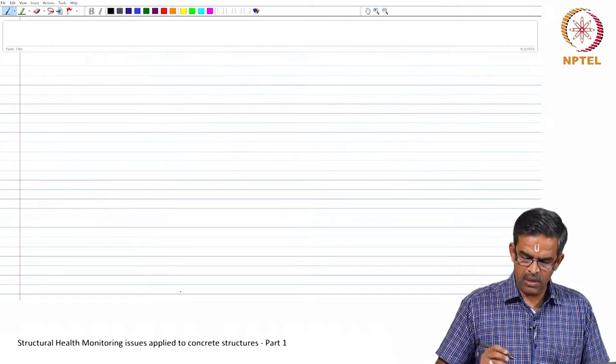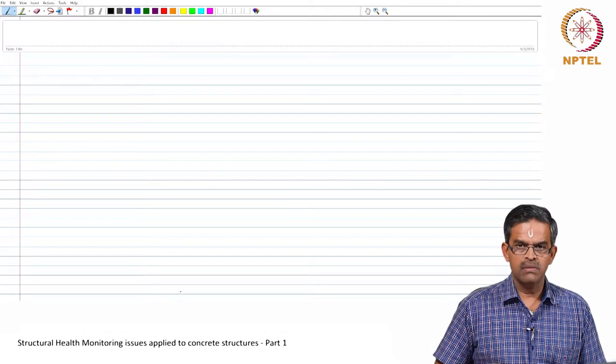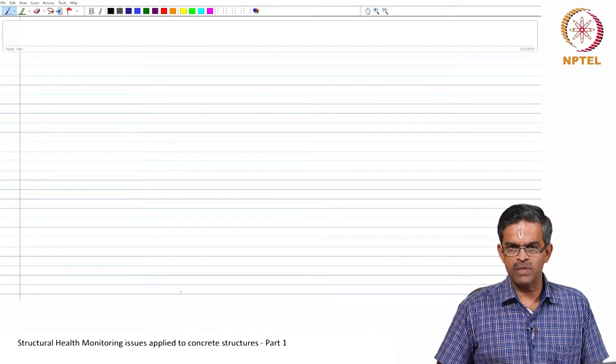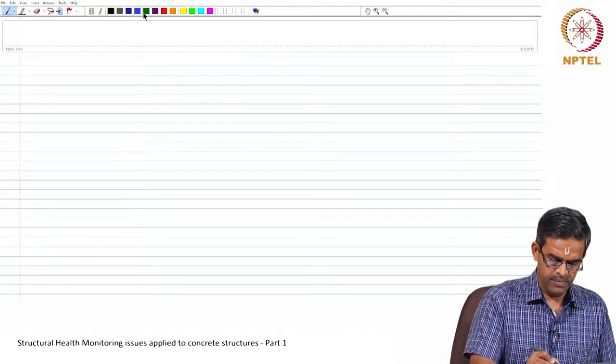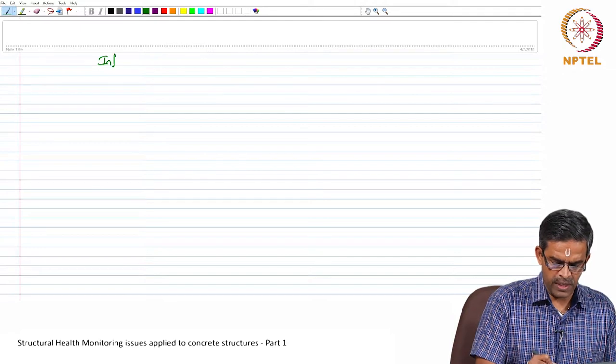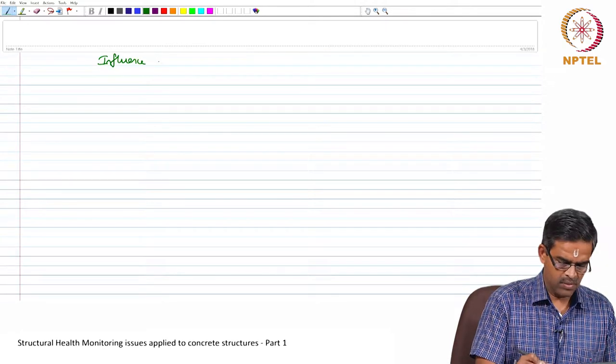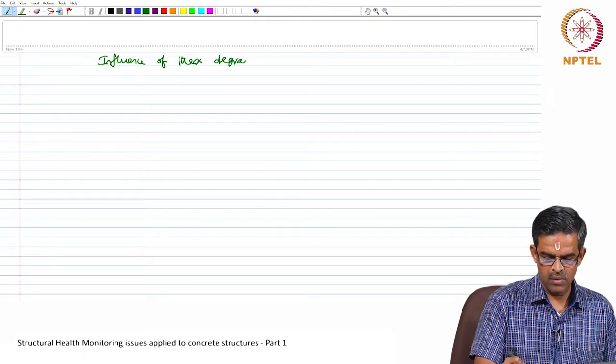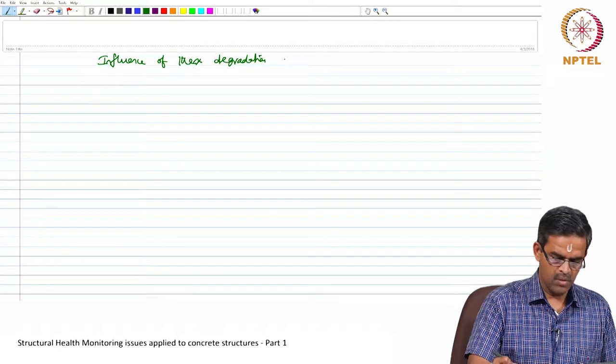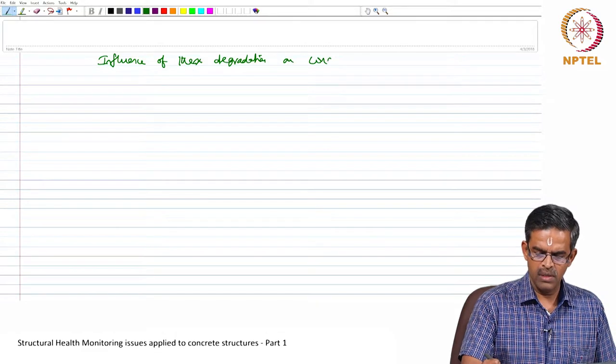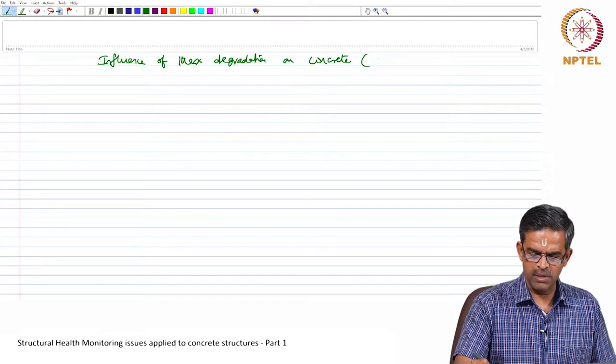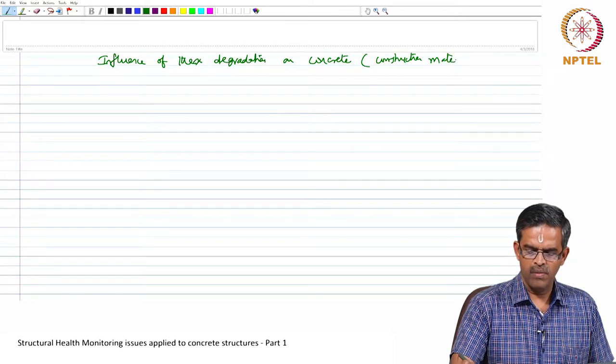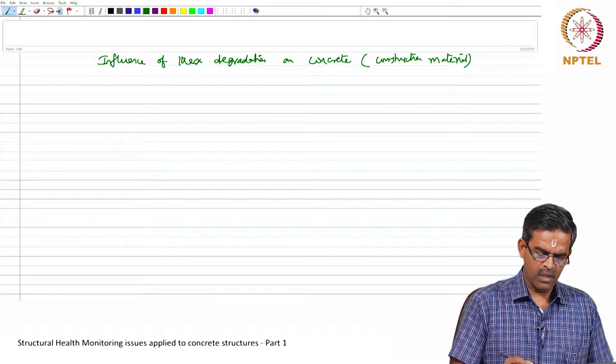Now, the question comes under such chemical, mechanical and physical degradation, what is the influence of these on concrete? So, influence of these degradations on concrete as a construction material are as follows.